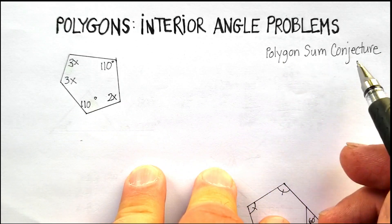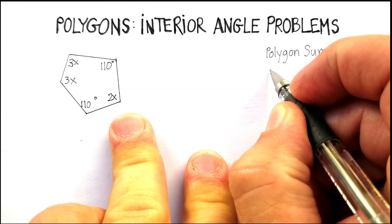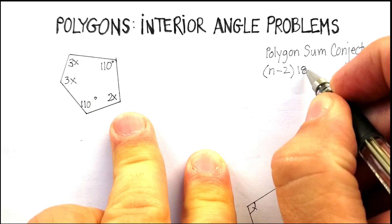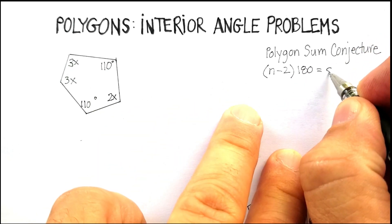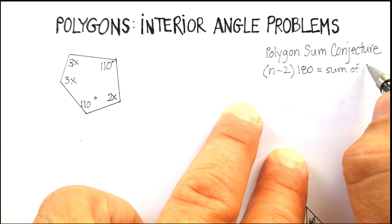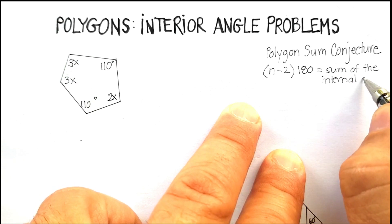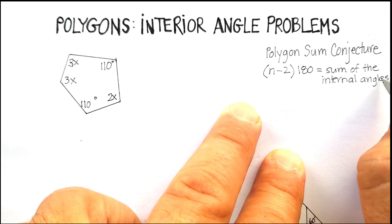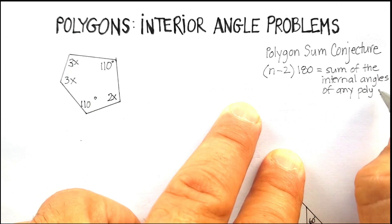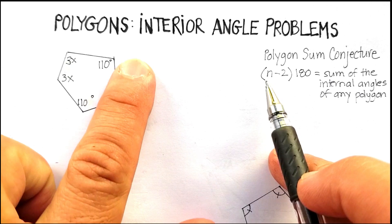First of all, let's talk about what the polygon sum conjecture is. Basically, the polygon sum conjecture is the following formula: n minus 2 times 180 will give you the sum of the internal angles of any polygon. What does that mean in English? n represents the number of sides in a polygon.